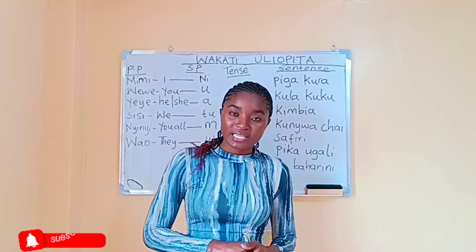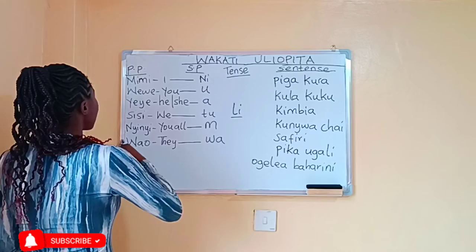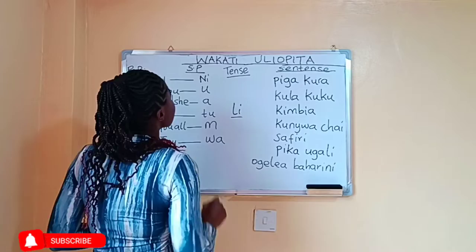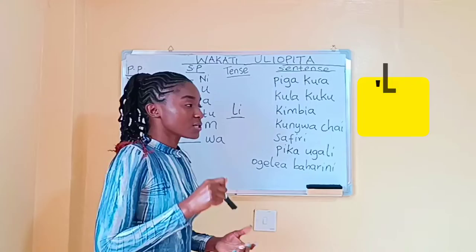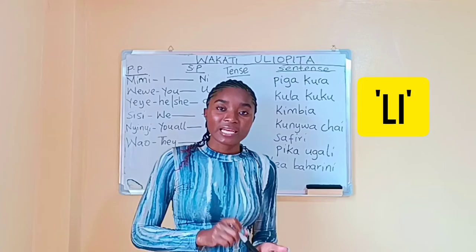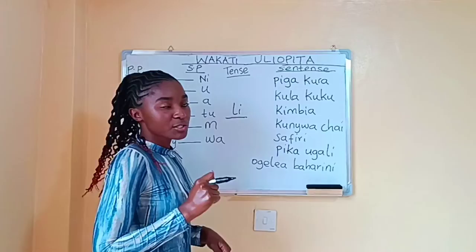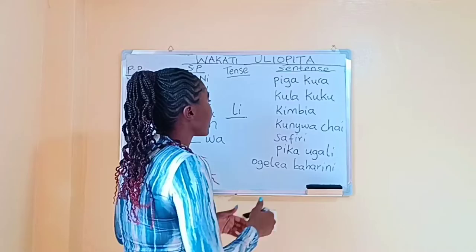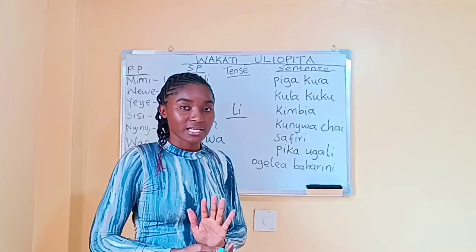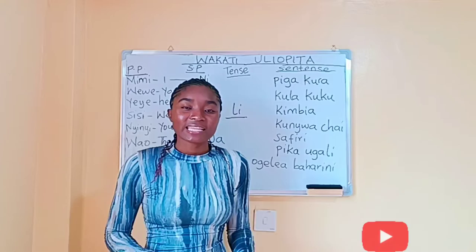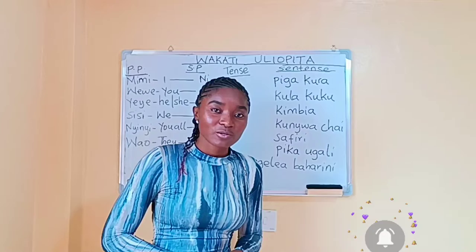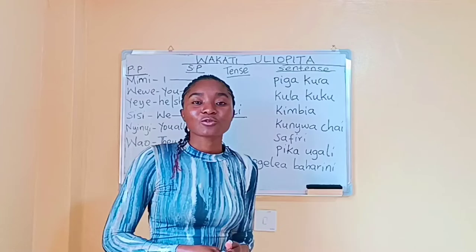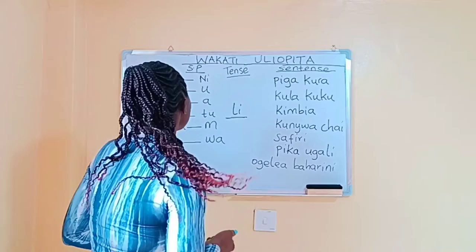In Swahili, we have a procedure that we follow when we are constructing sentences in past tense. We have the personal pronouns, we have the subject prefix, and then we have 'li' as our tense marker. That's what we use for past tense in Swahili. So if you see 'li' in a sentence, just know that sentence is in the past tense. We have a few sentences we are going to use as examples. If you're not subscribed, kindly click the subscription button below so you don't miss out on any videos. Let's make Swahili easy — let's begin.